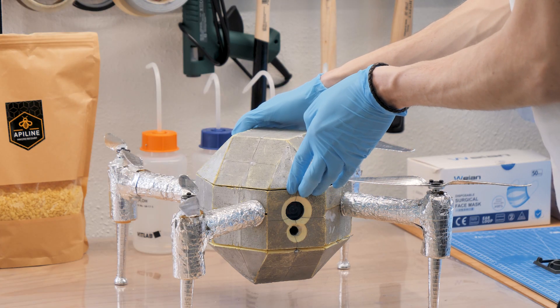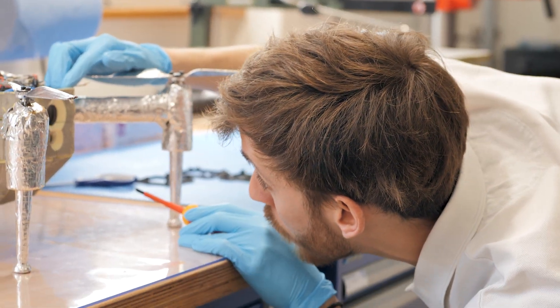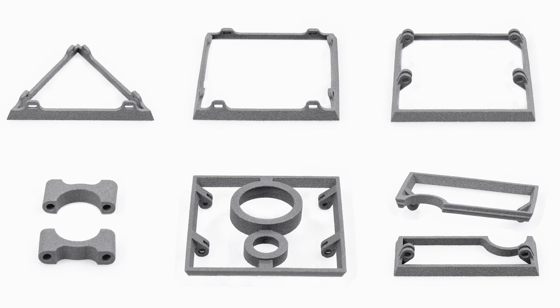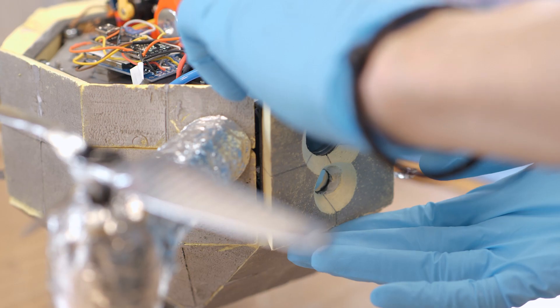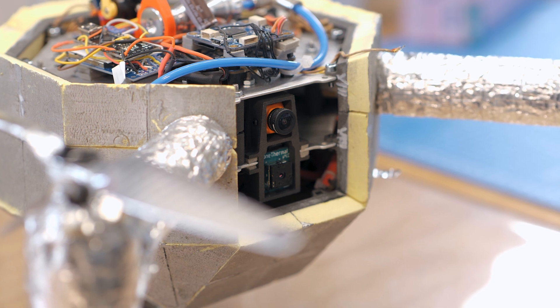We used the Sintrotec SLS technology to manufacture parts which can withstand high operating temperatures. The drone is designed for operating at up to 200 degrees Celsius and the maximum operating temperature of Sintrotec parts is around 180 degrees, so very close to our operating window.